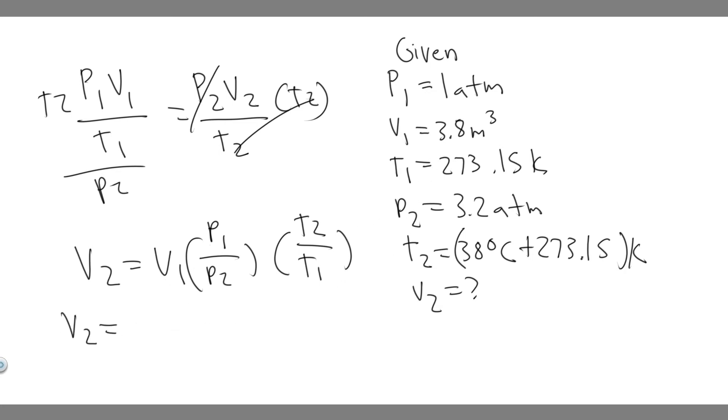So solving for V2, we just want to plug in V1, which is 3.8. P1 is going to be 1 atmosphere. You want to divide that by 3.2. And then T2 is going to be 38 plus 273.15.